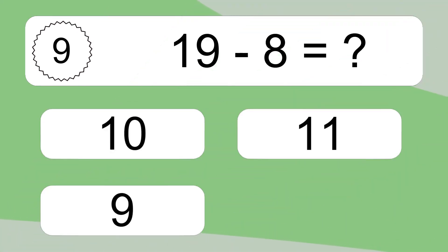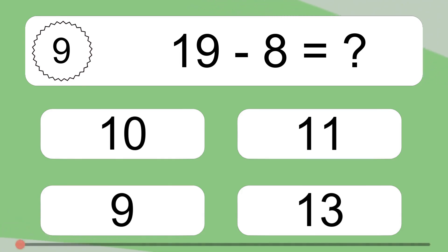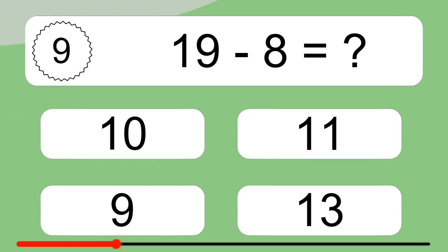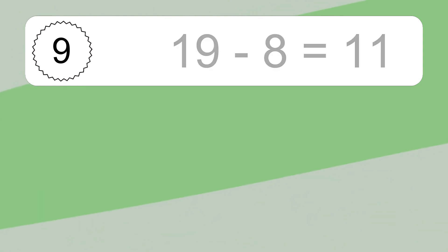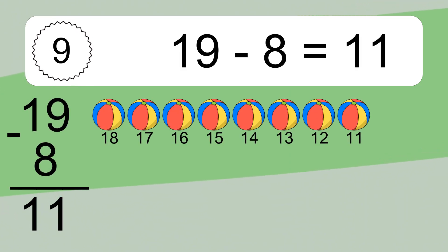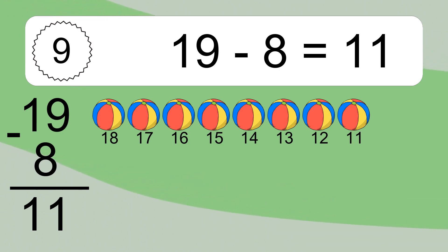19 minus 8 equals what? 19 minus 8 equals 11. Let's count it: 18, 17, 16, 15, 14, 13, 12, 11.